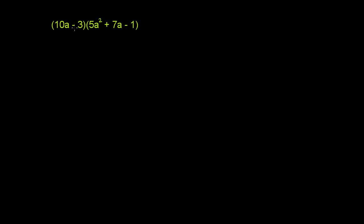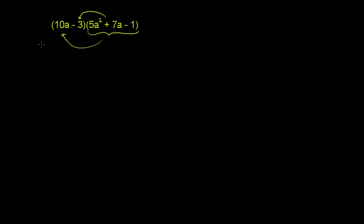We are multiplying 10a minus 3 by the entire polynomial 5a squared plus 7a minus 1. To do this, we can use the distributive property. We can distribute this entire trinomial times each of these terms: 5a squared plus 7a minus 1 times 10a, and then 5a squared plus 7a minus 1 times negative 3.